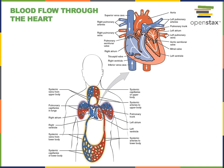The pulmonary circuit essentially begins with the right ventricle and ends with the left atrium. Then the systemic circuit begins with blood flowing out of the left ventricle into the aorta, which then branches into numerous arteries that distribute blood to tissues all through the body.